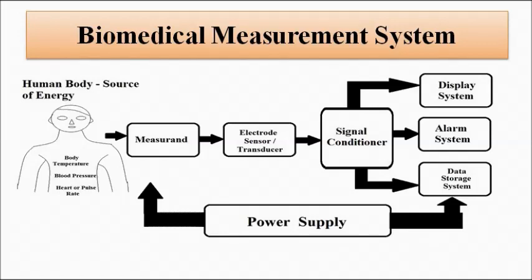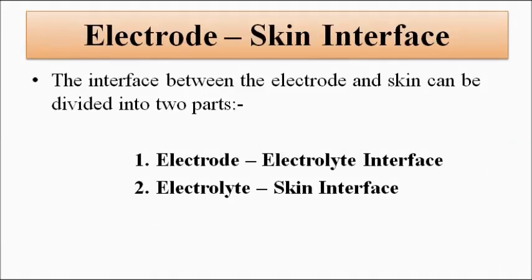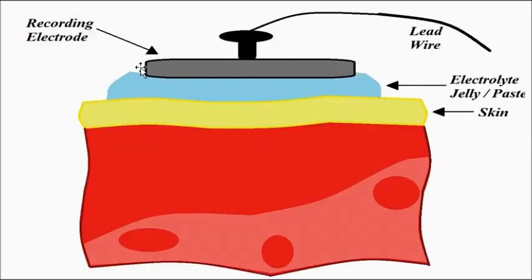Whatever type of electrode is used, it comes in contact with the skin — the upper layer of the body, the covering. Because of the contact between the metallic electrode and the skin, we come across this electrode-skin interface. This electrode-skin interface can be divided into two parts: the electrode-electrolyte interface and the electrolyte-skin interface.